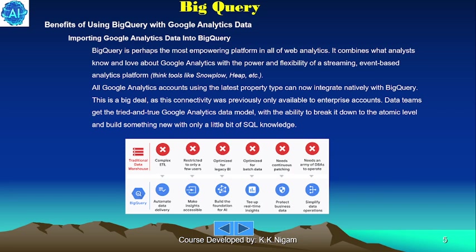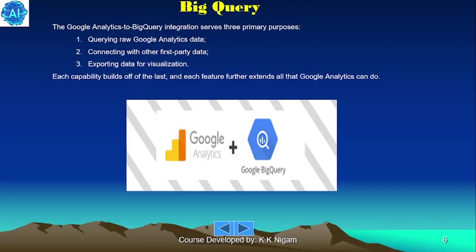Data teams get the tried-and-true Google Analytics data model with the ability to break it down to the atomic level and build something new with only a little bit of SQL knowledge. The Google Analytics to BigQuery integration serves three primary purposes: number one, querying raw Google Analytics data; second, connecting with other first-party data; third, exporting data for visualization. Each capability builds off the last, and each feature further extends what Google Analytics can do.